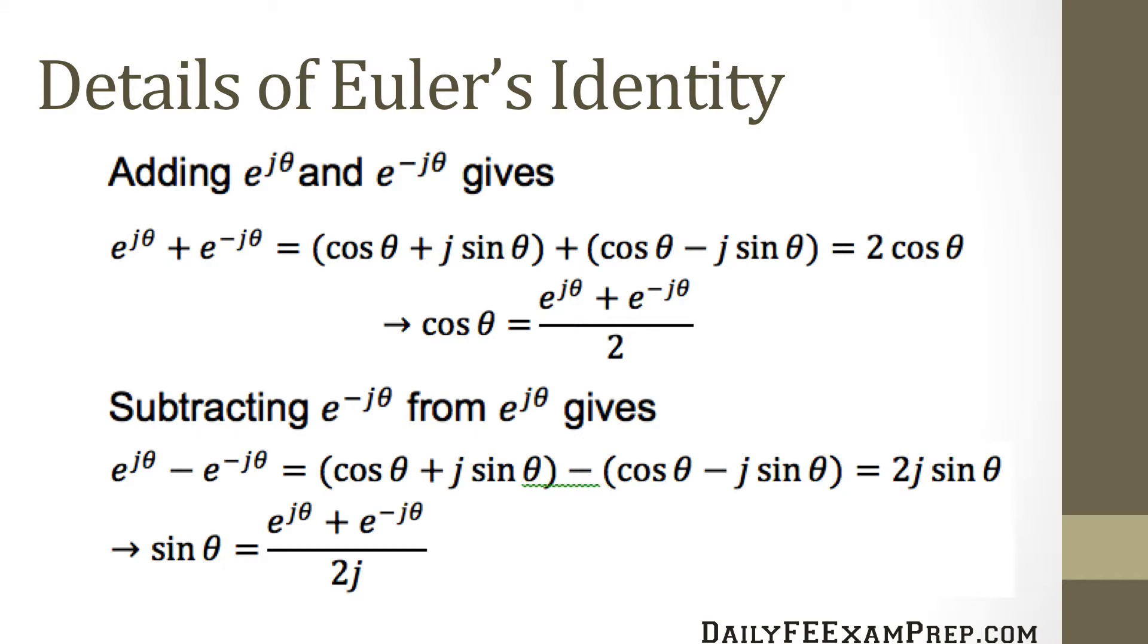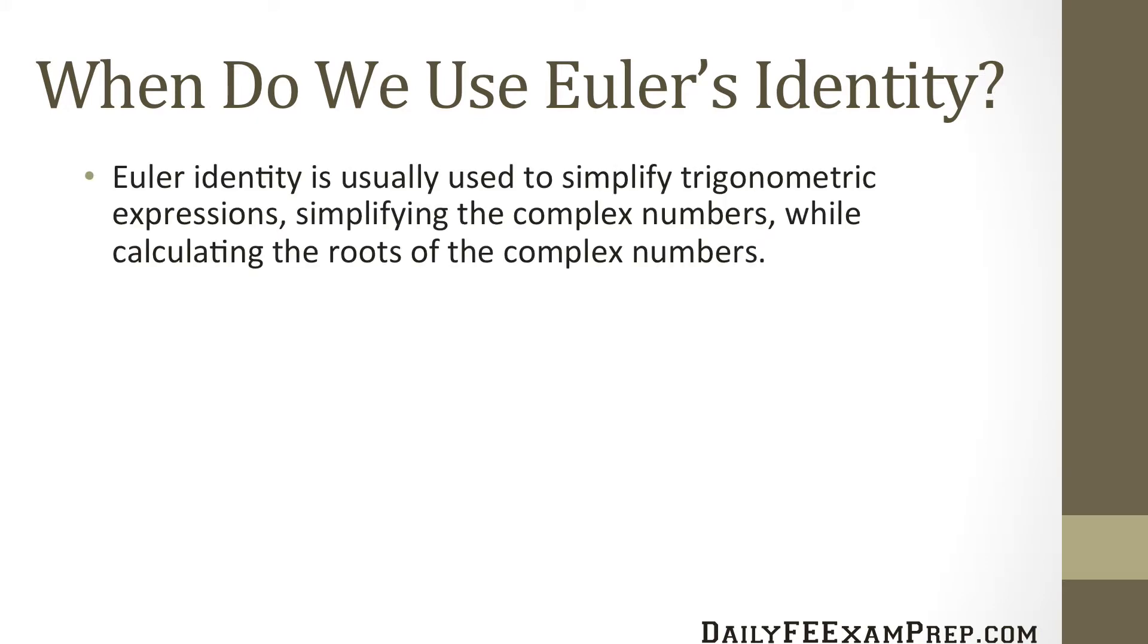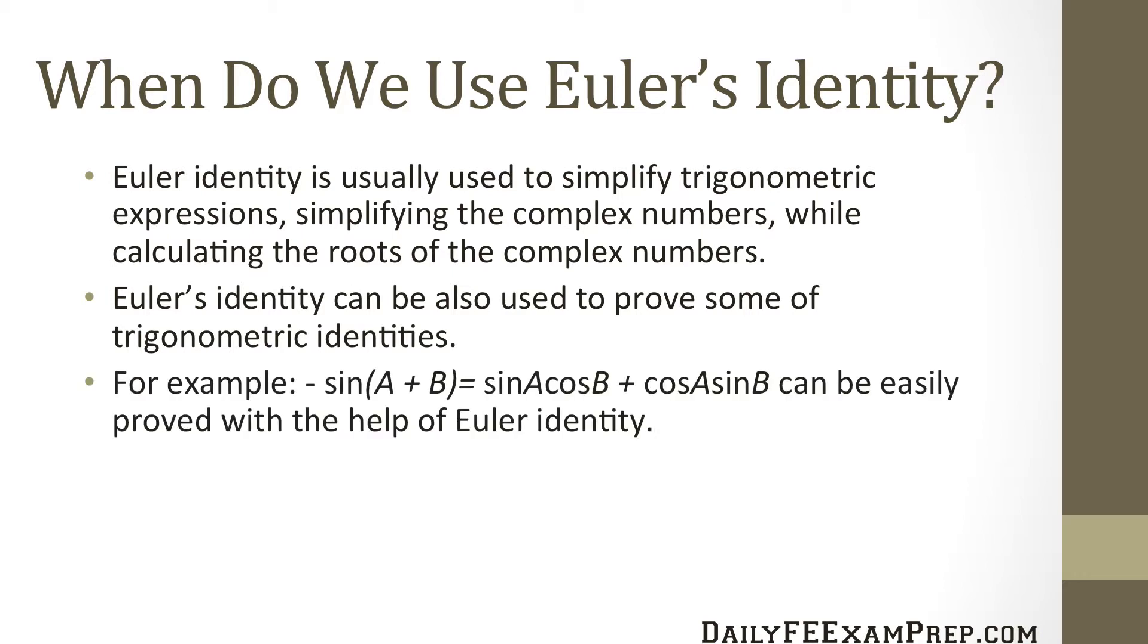So now we have a definition for sine theta and cosine theta in terms of Euler's identity. So when do we use Euler's identity? Well, the Euler identity is usually used to simplify trigonometric expressions and simplifying the complex numbers while calculating the roots of the complex numbers. Euler's identity can also be used to prove some trigonometric identities.